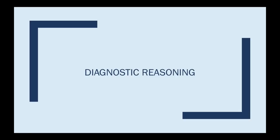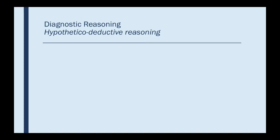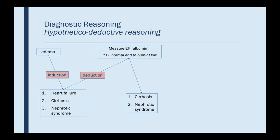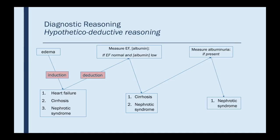Let's start with diagnostic reasoning. Most of us grew up before data mining with the hypothetical deductive reasoning model — you have a hypothesis and then you deduce that something will be true and you'll explore that. For example, a patient comes in with edema and you, through induction, come up with a list of causes of edema: heart failure, cirrhosis, nephrotic syndrome. Then you make a deduction: if it's heart failure, the ejection fraction should be low; if it's cirrhosis or nephrotic syndrome, the albumin should be low. You measure those, find that the ejection fraction is normal and albumin is low — that rules out CHF, leaving you with cirrhosis and nephrotic syndrome. Then you deduce there'll be albumin in the urine; if it is present, it's probably nephrotic syndrome. Through this series of deductions and hypothesis generation, you come up with the correct diagnosis: nephrotic syndrome.